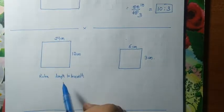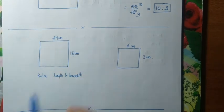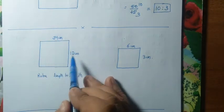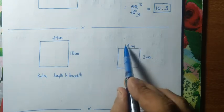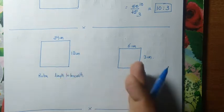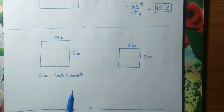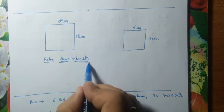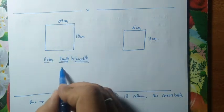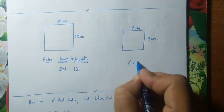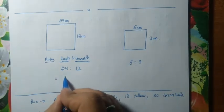Now let's look at another question. There are 2 photo frames. The first photo frame has length 24 cm and breadth 12 cm. The second photo frame has length 6 cm and breadth 3 cm. The question may ask: do both frames have the same ratio? To find out, we calculate length to breadth ratio. First length, then breadth — so the ratio of the first frame is 24 : 12.